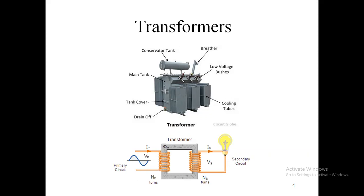On the transmission side, voltage is increased from low to high because we transmit power at high voltage levels. We generate voltages at around 11 kV or 6.6 kV, and we must transmit at higher levels like 440 kV, 765 kV, or 220 kV, so we step up the voltage using a transformer.